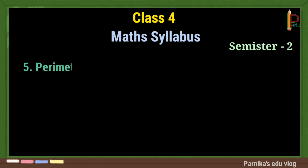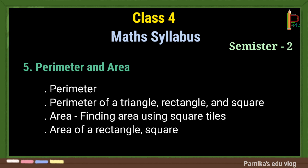The fifth chapter is Perimeter and Area. This is a new chapter. It contains perimeter, perimeter of a triangle, rectangle, and square. Then area — finding area using square tiles, and area of a rectangle and square.